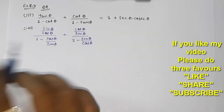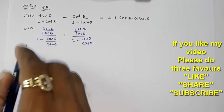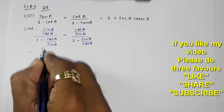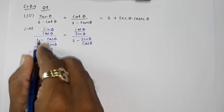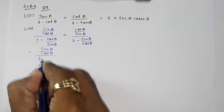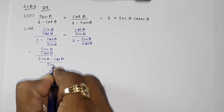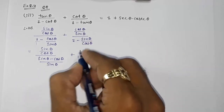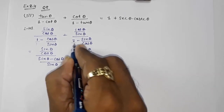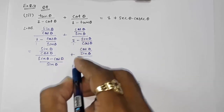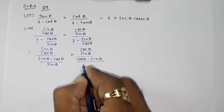Now we have converted. In the denominator we have to find the LCM because we have a fraction and a single number. So for the first part, multiplying through by sin θ, we get sin θ upon cos θ in the numerator, and the denominator becomes sin θ minus cos θ upon sin θ. For the second part, multiplying through by cos θ, the denominator becomes cos θ minus sin θ upon cos θ.